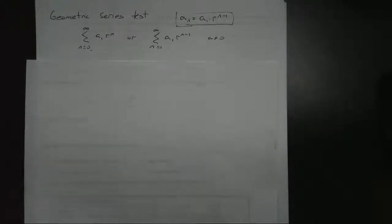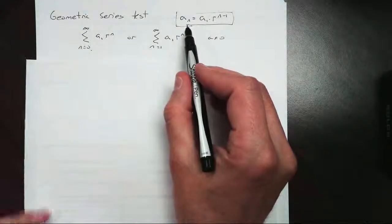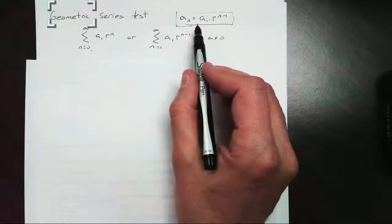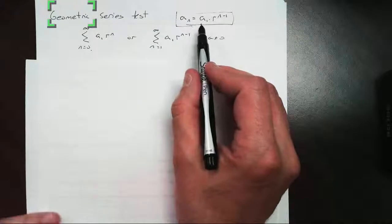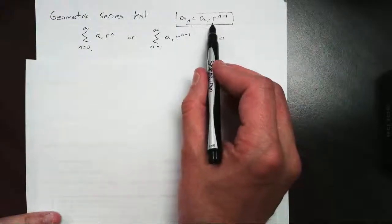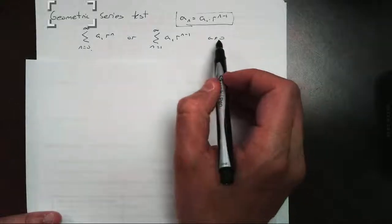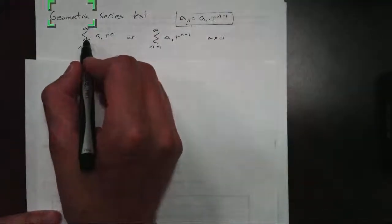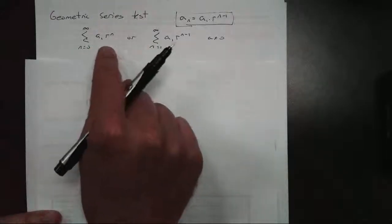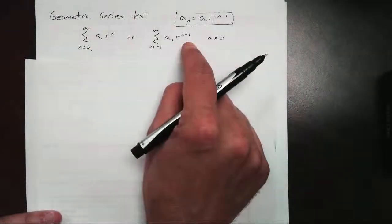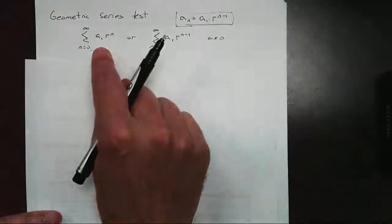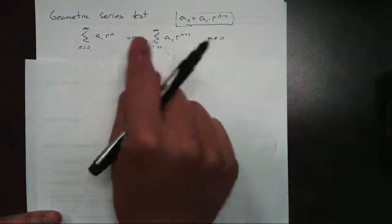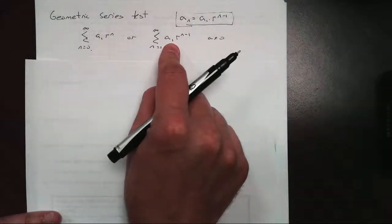Today we're going to be looking at the geometric series test for convergence and divergence. From pre-calculus, we know that to get the terms of a geometric sequence, we take the first term multiplied by r — the common ratio — to the n minus 1 power. As a series, we write this as a summation, adding a whole bunch of terms together. What we want to find out is: if we add an infinite number of geometric terms, will they converge or diverge?